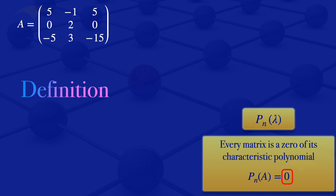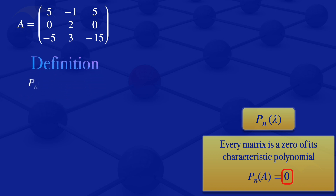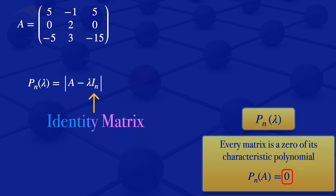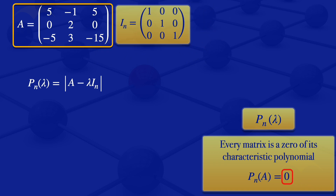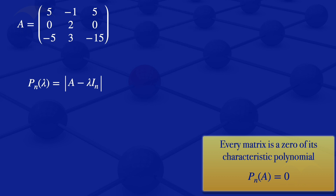By definition, the characteristic polynomial P_n of lambda equals the determinant of A minus lambda I_n, where I_n is the same size as the given matrix. In this case our matrix is 3 by 3, so I_n will be the identity 3 by 3 matrix multiplied by lambda, which results in lambdas on the diagonal. We are subtracting a matrix with lambdas on the diagonal from matrix A, which results in subtracting lambda from the diagonal elements of A: 5, 2, minus 15.